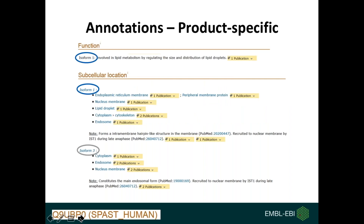Proteomics data help us towards the identification and characterization of cellular proteins and their proteoforms that might be present, absent or altered under certain environmental or physiological conditions including disease.